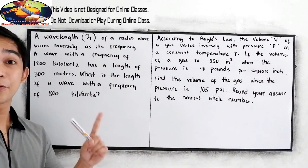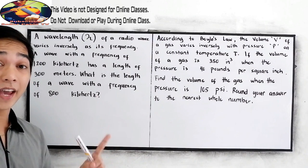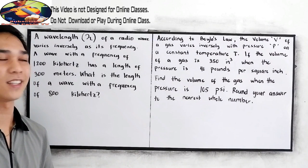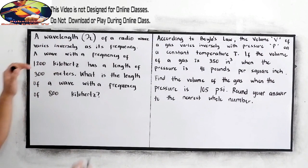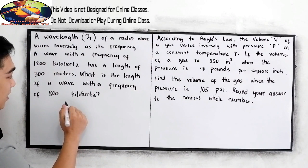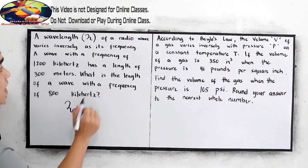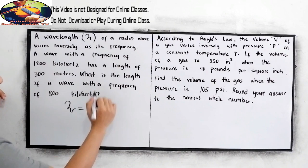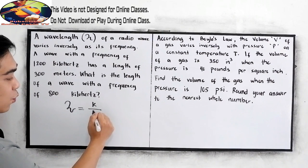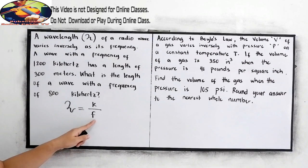First, let's write the equation of variation. So, wavelength, we have the symbol lambda. So, our radio wave varies inversely as the frequency. Frequency is F.